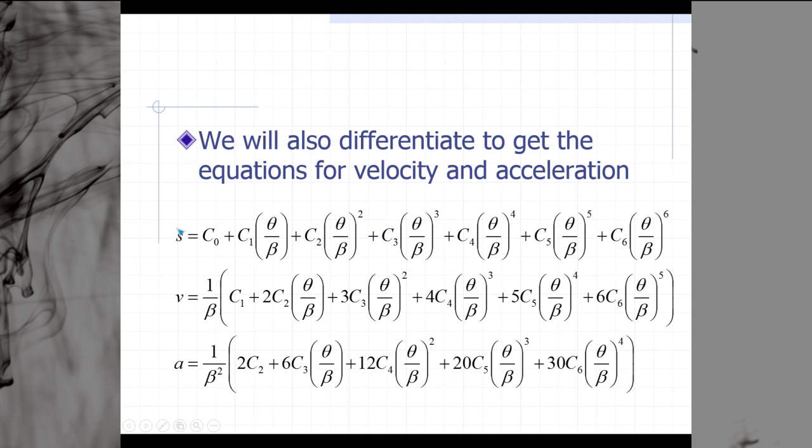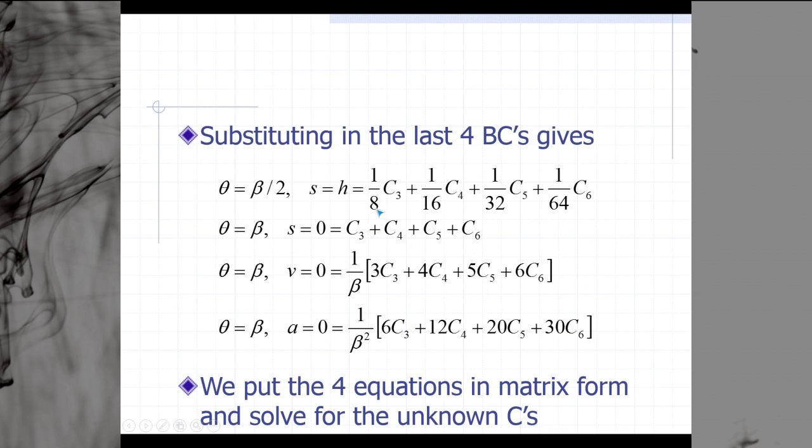That is what we have for our second row: theta equal to beta over 2, s equal to h. With an h here and beta over 2 here, what we'll end up with is 1/2 to the 3rd power, 1/2 to the 4th power, 1/2 to the 5th power, 1/2 to the 6th power. 1/2 to the 3rd power is 1 over 8, and so that's where our 1/8th comes from, our 1/16th, 1/32nd, and 1/64th. While we haven't determined these values of c yet, we do have an equation that says h is equal to the following.